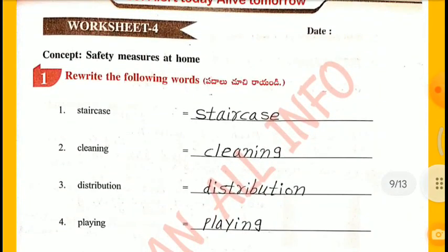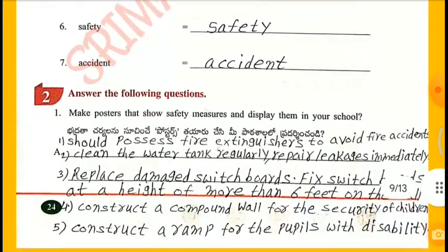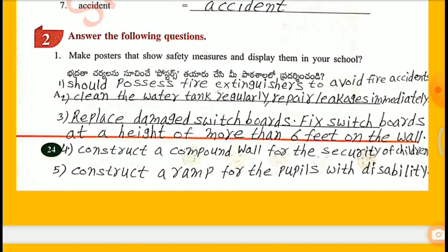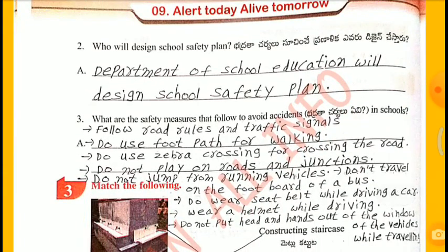Worksheet 4 - Concept: Safety measures at home. Pre-write the following: Staircase, Cleaning, Distribution, Playing, Poster, Safety, Accident. Make posters that show safety measures: Possess fire extinguishers to avoid fire accidents. Clean the water tank regularly. Repair leaks immediately. Replace damaged switchboards. Fix switchboards at a height of more than 6 feet on the wall. Construct a compound wall for the security of children. Construct a ramp for people with disability. Who will design the school safety plan? The Department of School Education will design the school safety plan.